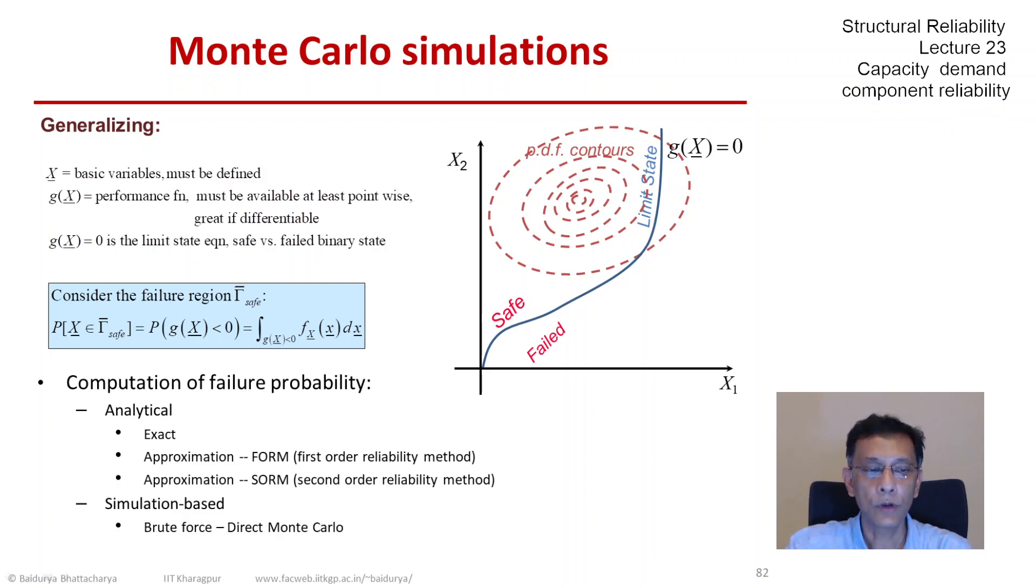The direct Monte Carlo, also known as brute force Monte Carlo. And then in the next lecture, we are going to look at importance sampling which is one of the variance reduction techniques.